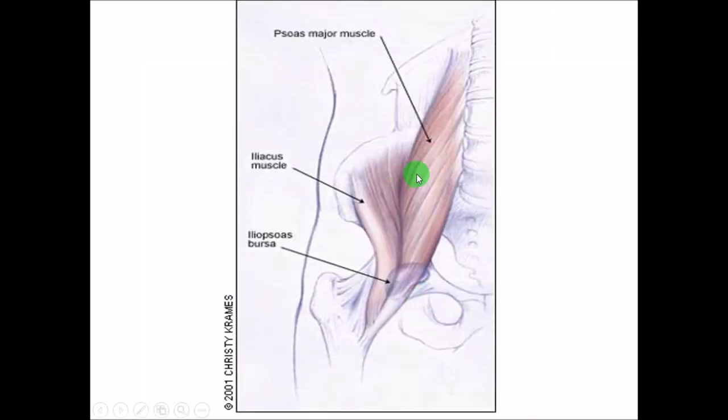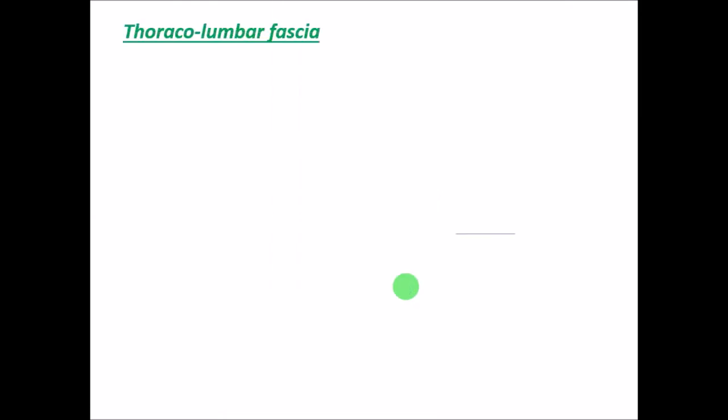Here you can see the iliopsoas — the psoas major and iliacus together. Between them there is a small bursa called the iliopsoas bursa, which allows frictionless movement and prevents friction between the two muscles.